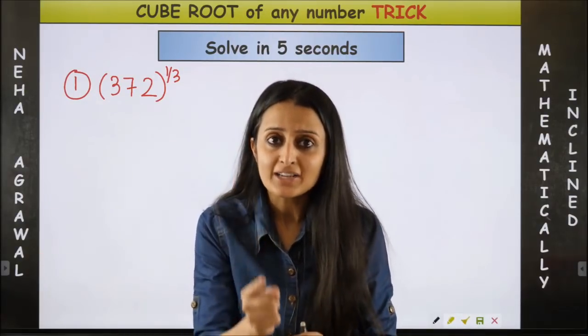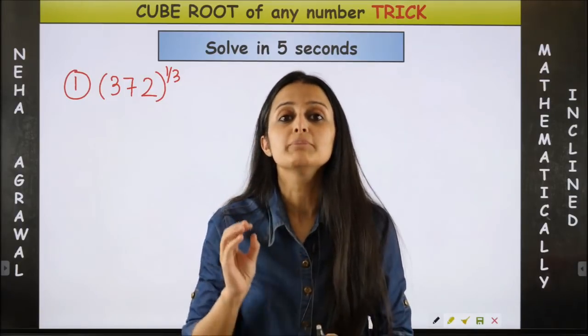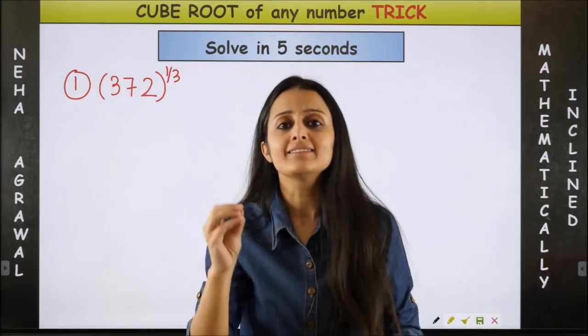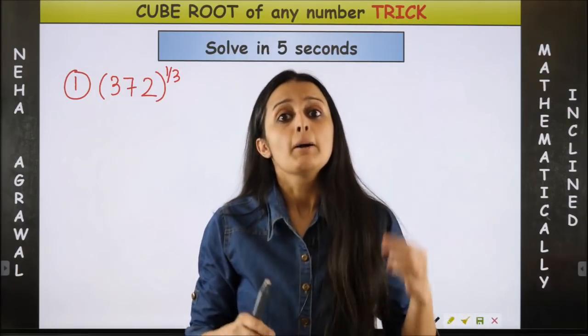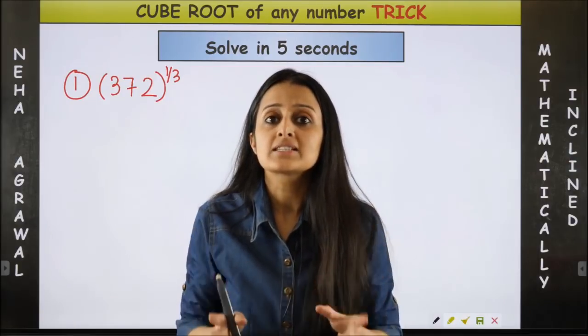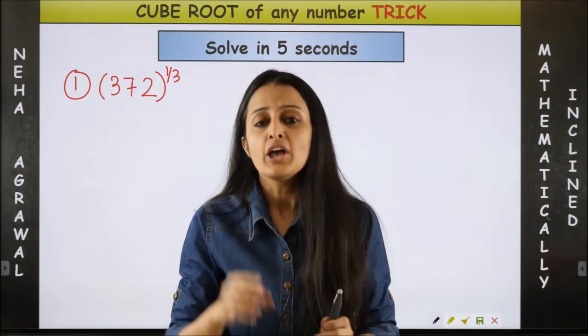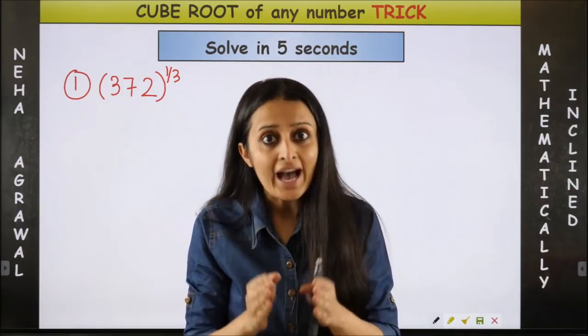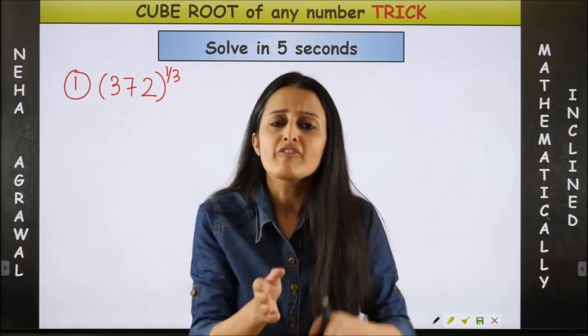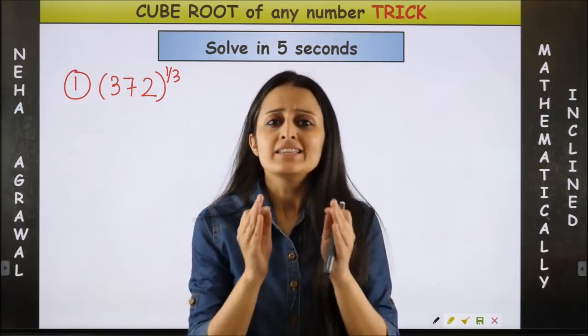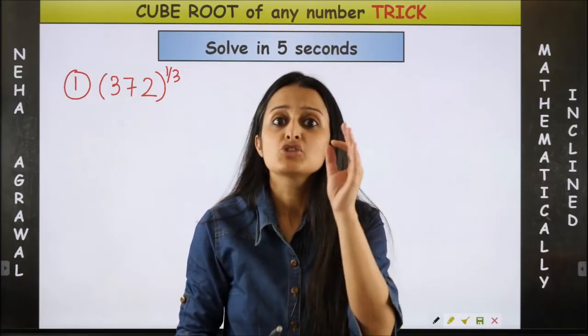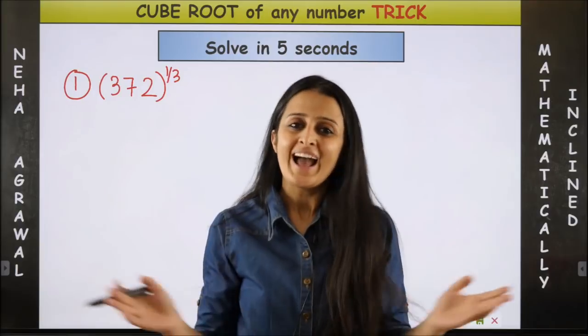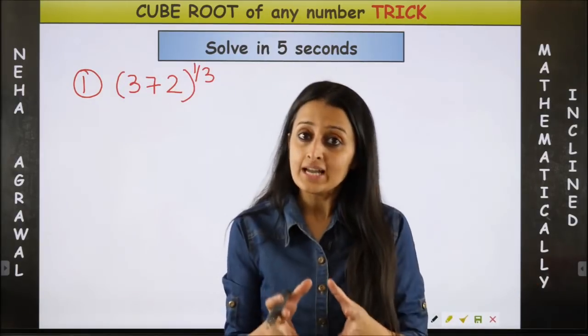You can get the answer super quickly, but third, make sure that this one gives us an approximate answer which is very close to the exact one. But you can expect an error of maximum 0.4 or 0.5, meaning you have to apply this trick on questions where you need an approximate value.